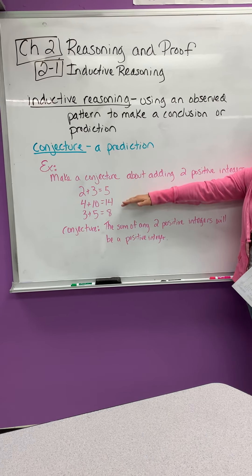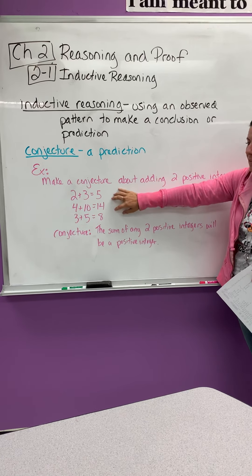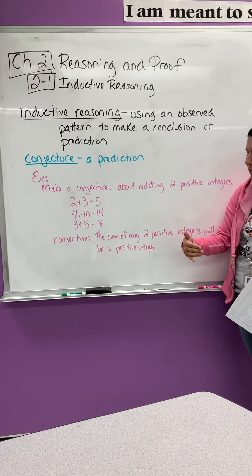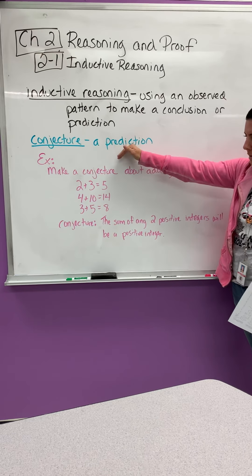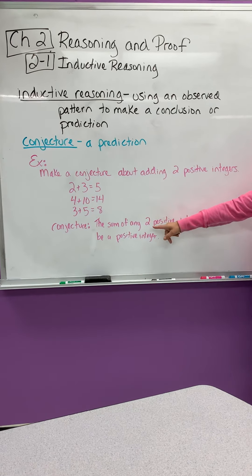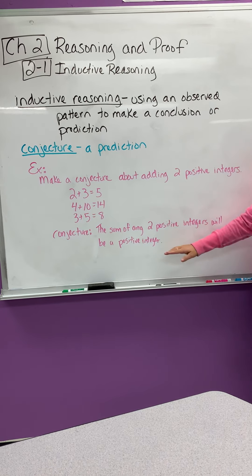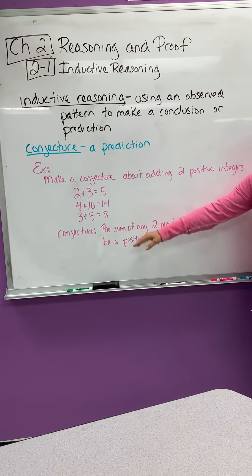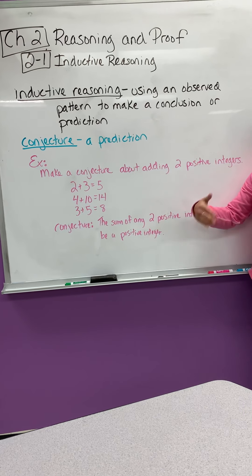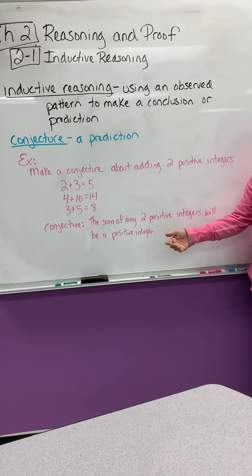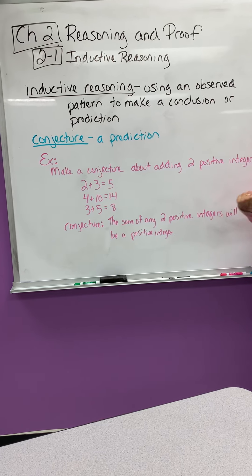This is not all the options that can happen, but we're using this sample to make a prediction about the future. So my conjecture, which is a prediction about this scenario, it says the sum of any two positive integers will be a positive integer. So we're using kind of a sample to make a generalized statement as to what's going to happen with any two positive integers. So the conjecture is a prediction.